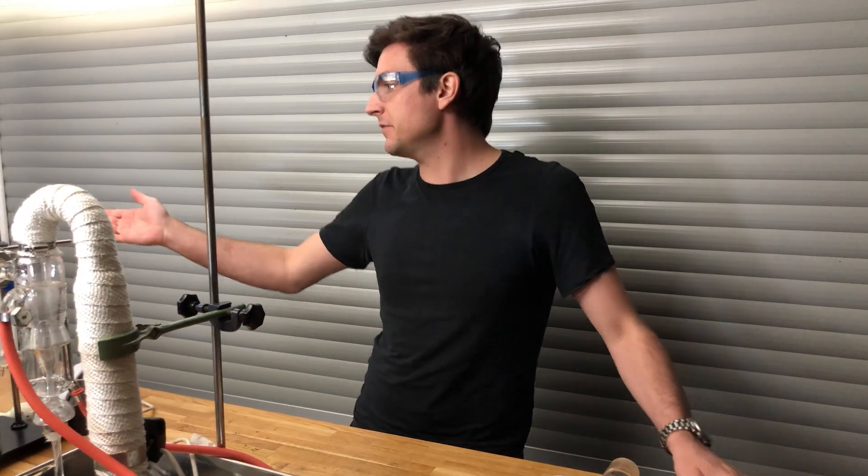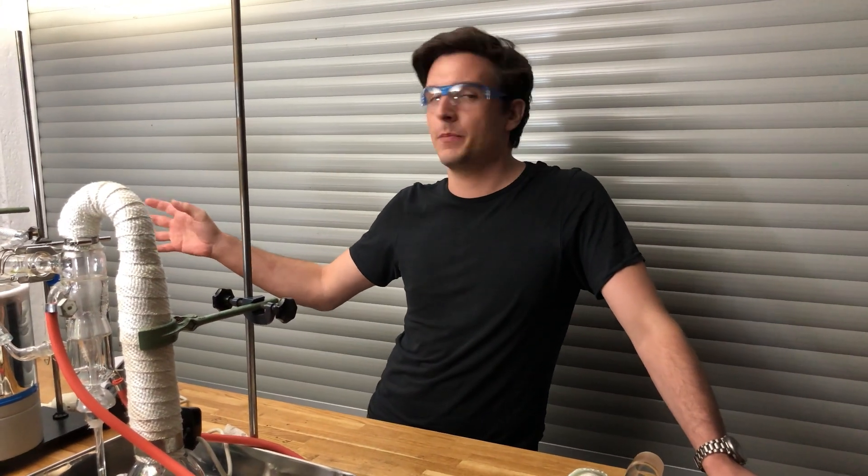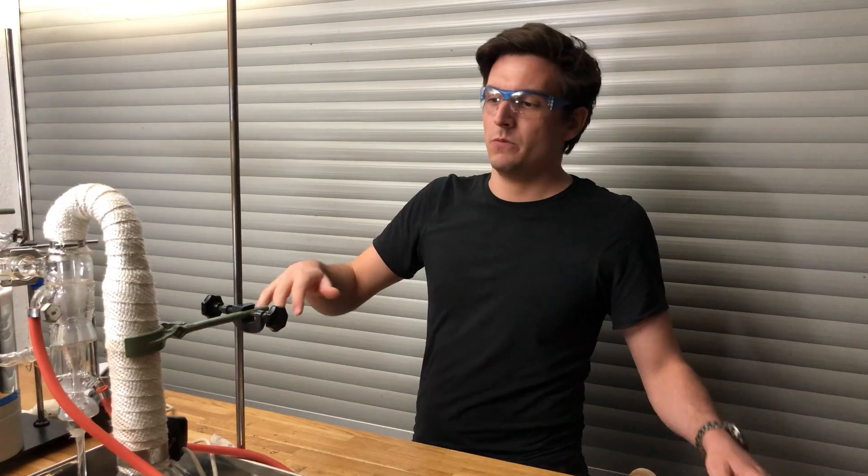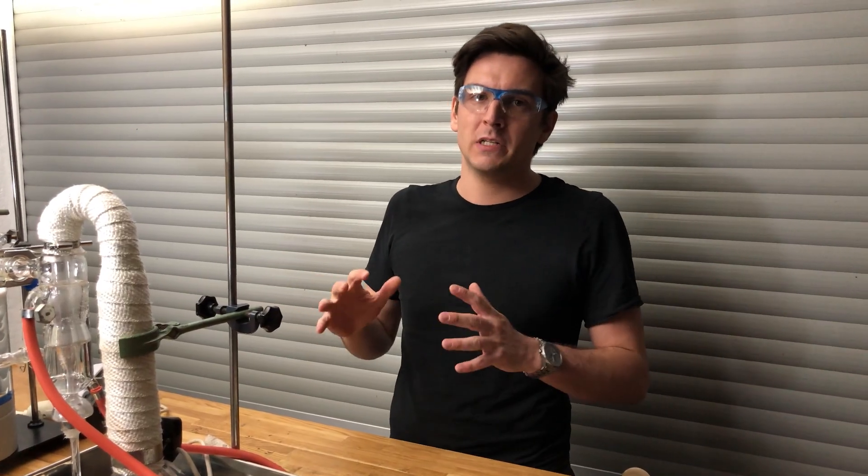We are currently at 7.33 times 10 to the power of minus 4 millibars. I think we could get lower with the appropriate connections. Maybe in the future when I set up the Schlenk setup permanently I will show it to you. But I think this demonstration was good enough to show you a mercury diffusion pump in action.